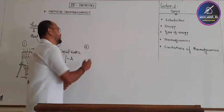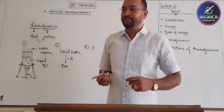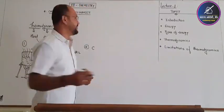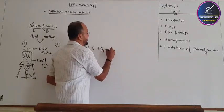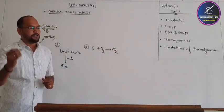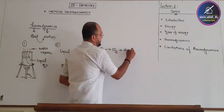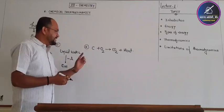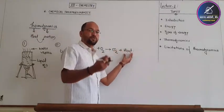Let's take another example. If we consider coal — or carbon — and burn it in the presence of air, that is oxygen, it will get converted into carbon dioxide with the release of heat. It means that, again in this example, heat is in motion.